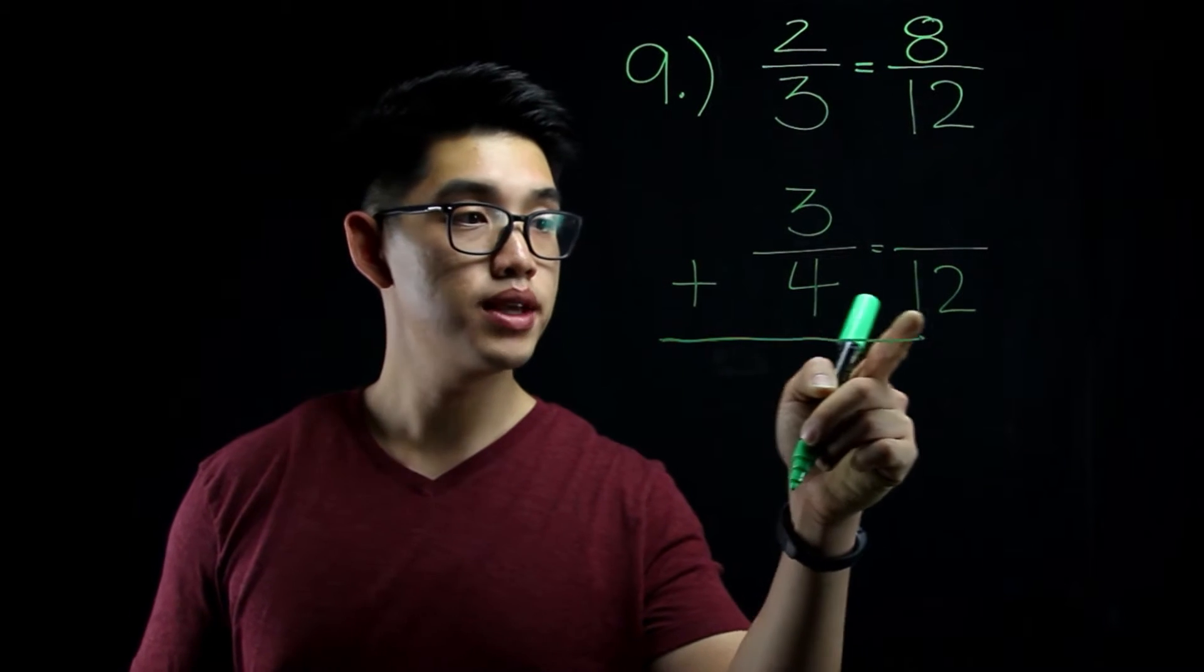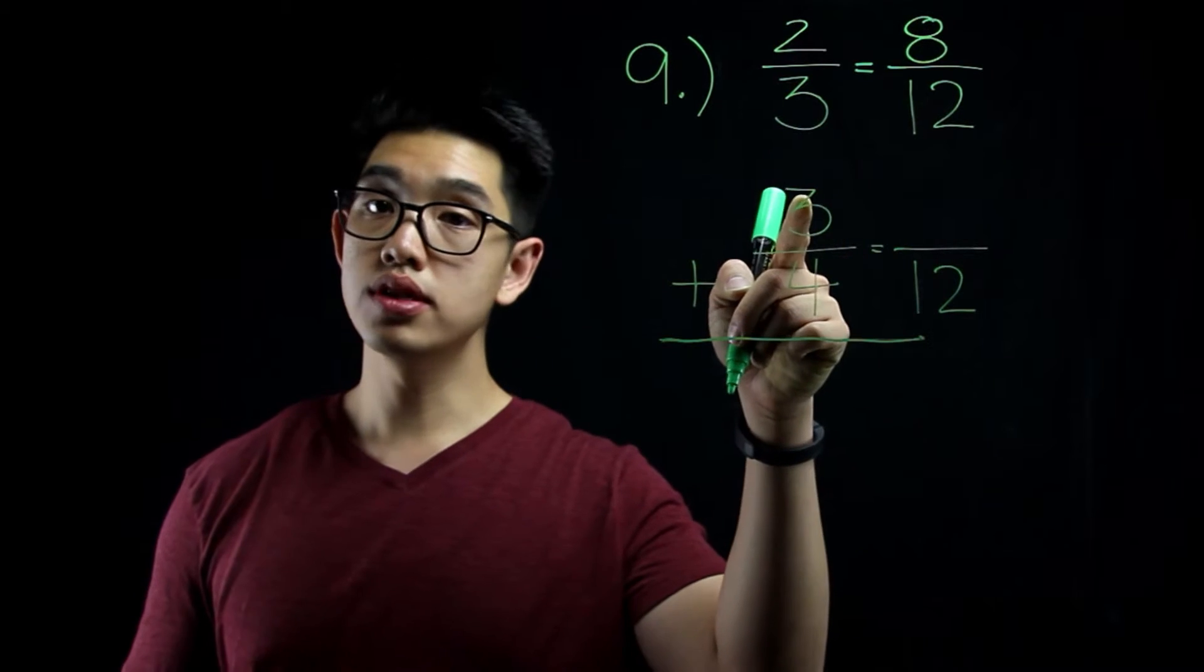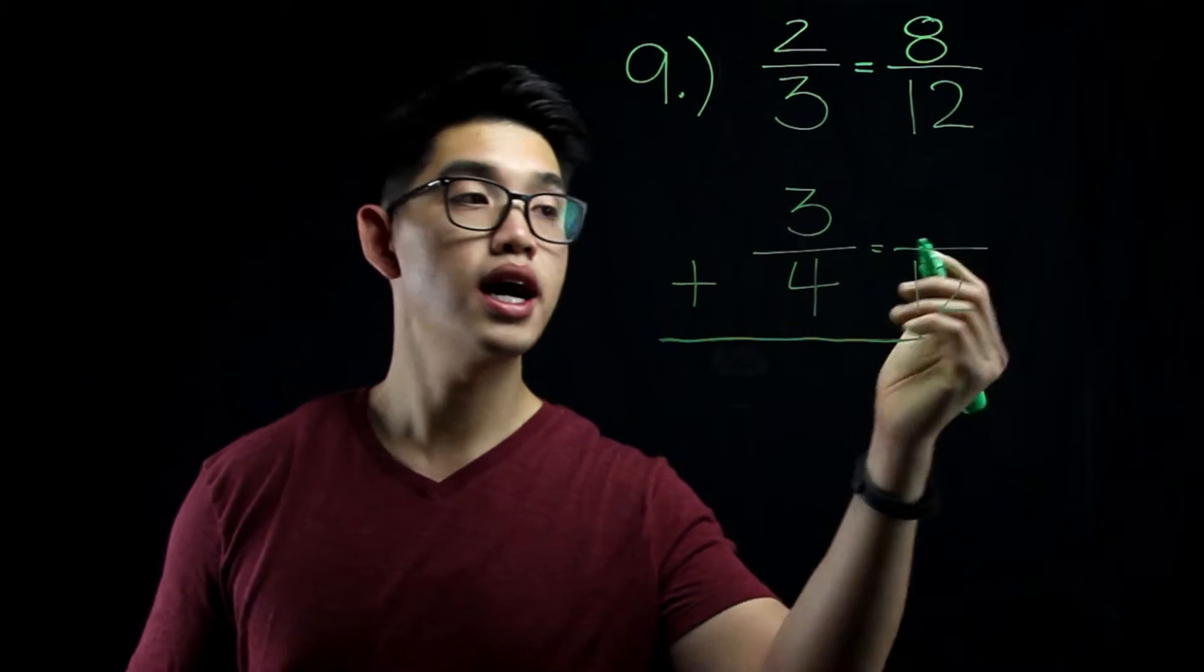Over here, I see that 4 became 12 because I multiplied the denominator by 3. So I'm going to do the same thing to the numerator, 3 times 3, that equals to 9.